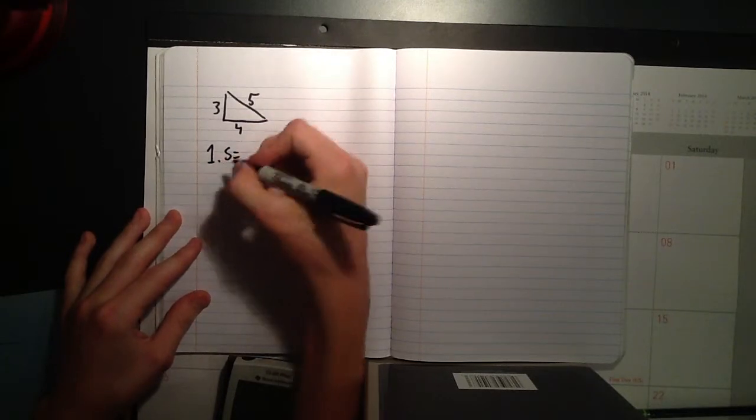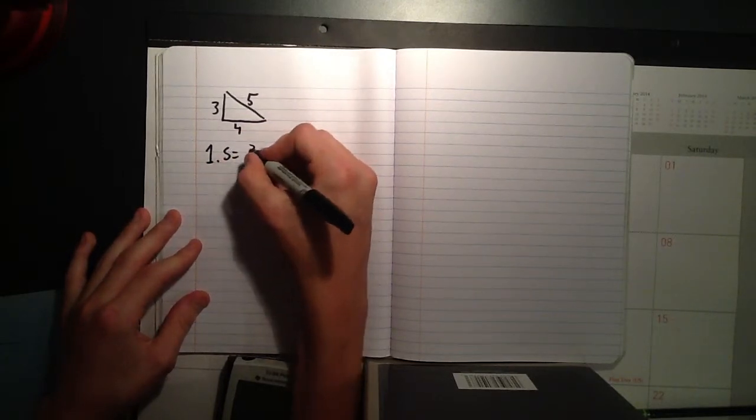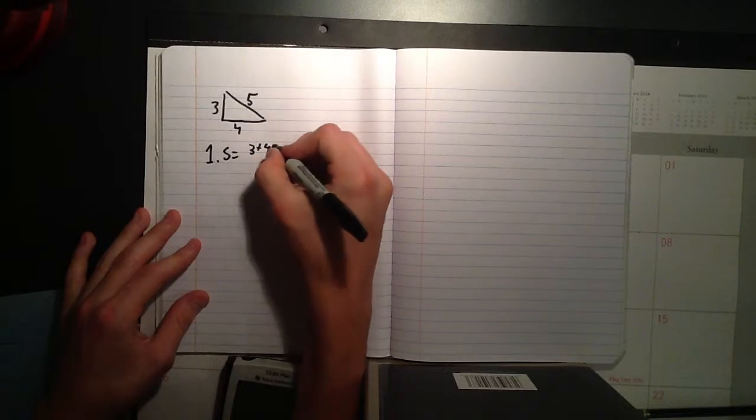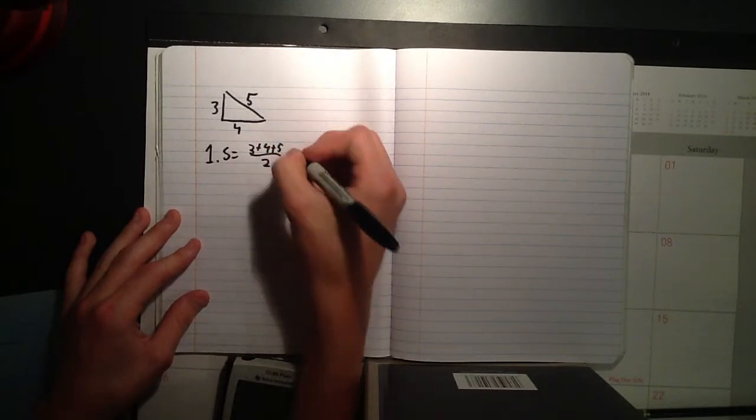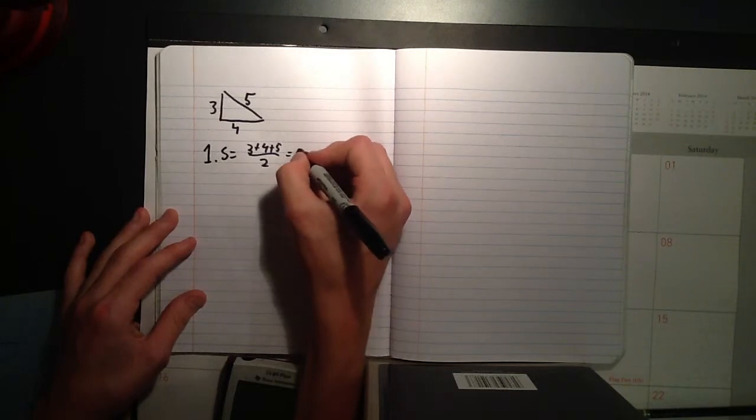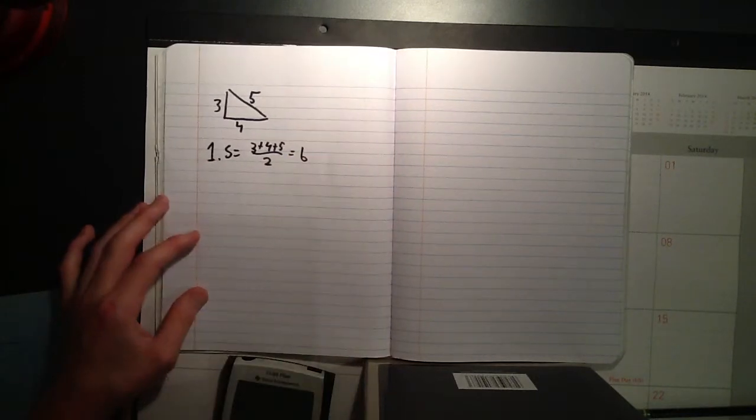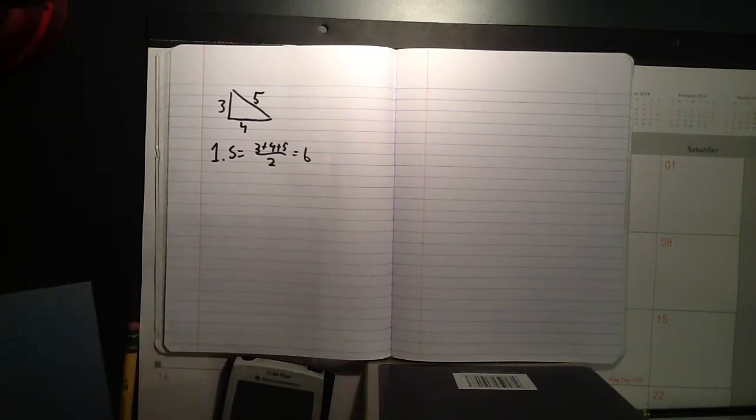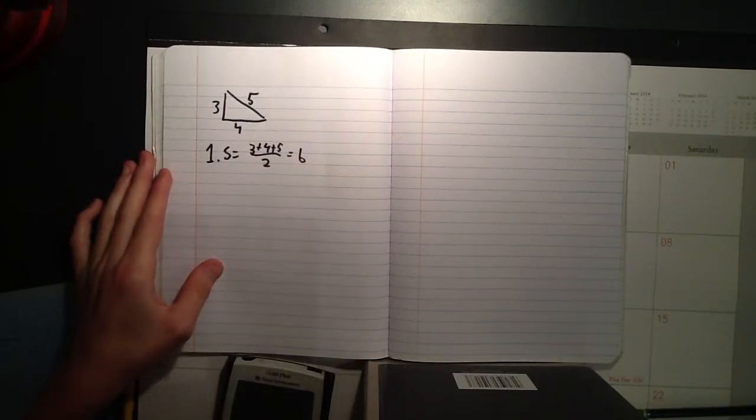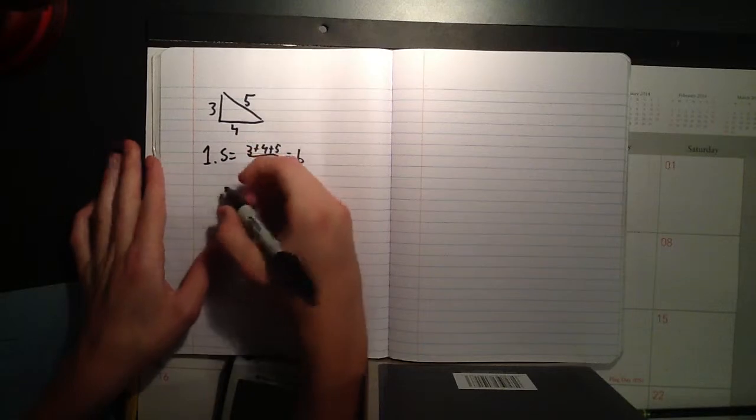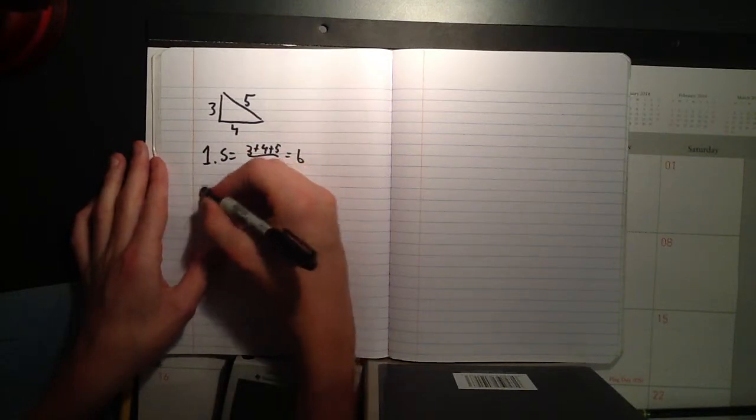And, s equals three plus four plus five over two. Seven... twelve over two equals six. And then, we have... Really? Really? Is that simple? Okay. Six. It is.